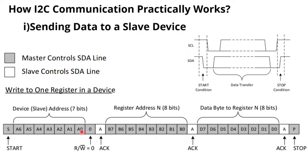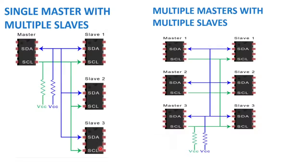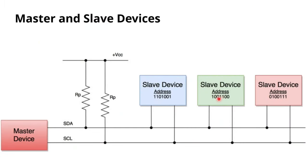After the startup, we send the 7-bit slave address (bits A0 to A6). The 8th bit indicates read or write — write is zero. Today we focus on 7-bit addressing, though 10-bit addressing is also supported. This 8-bit sequence is sent bit by bit to the slaves. For example, if we send address 1001100 with write bit zero, the slave whose address matches will respond with an acknowledgement.